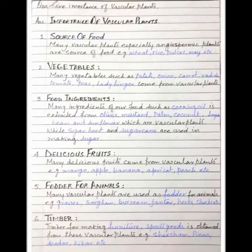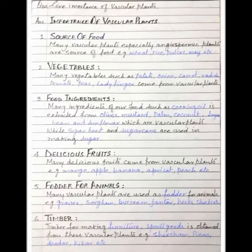The third heading: food ingredients. Many ingredients of our food — such as cooking oil — are extracted from olives, mustard, palm, coconut, soya bean, and sunflower, which are vascular plants, while sugar beet, sugar cane are used in making sugar.